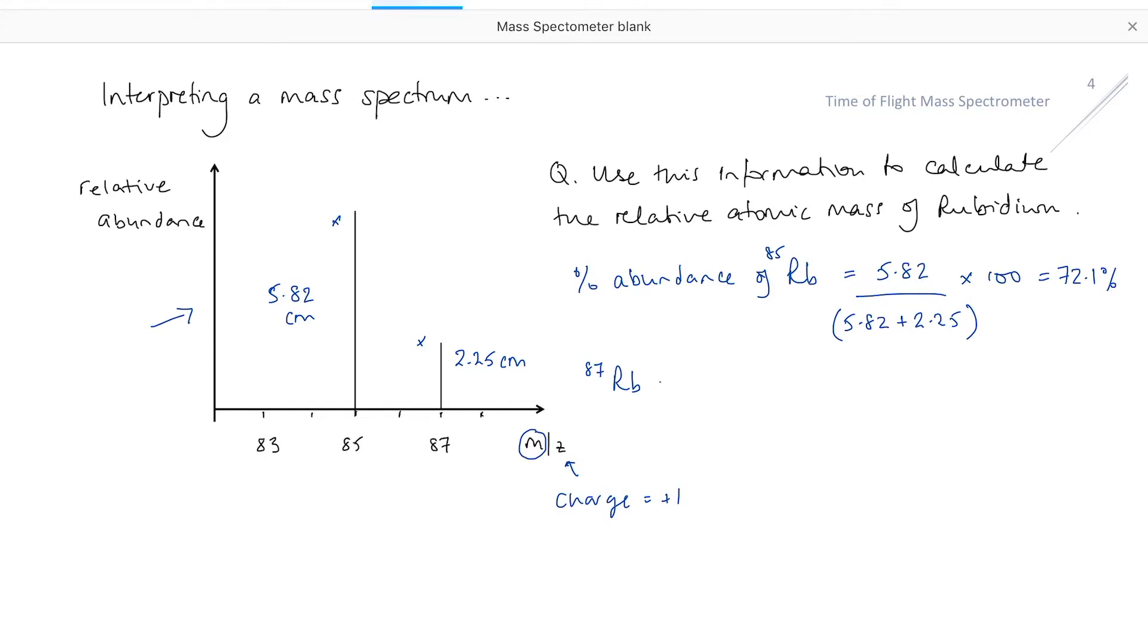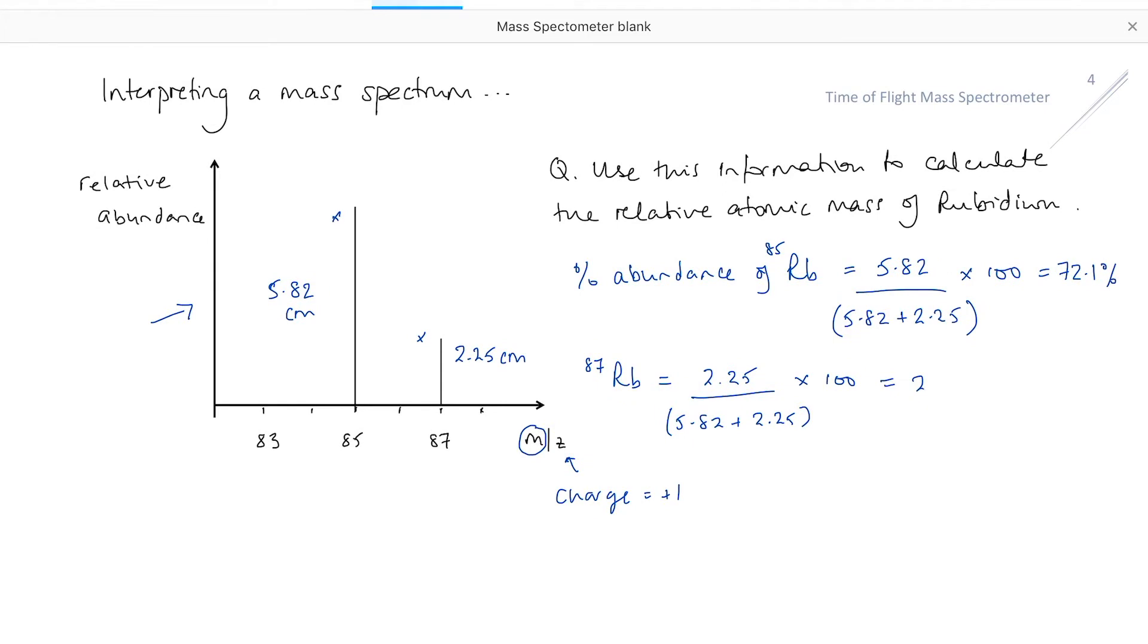I can do the same for rubidium-87. In this case, it's going to be 2.25 divided by 5.82 plus 2.25, so the relative amount divided by the total times 100, and that comes out at 27.9%. So now I have the percentage abundance and the mass of each isotope.